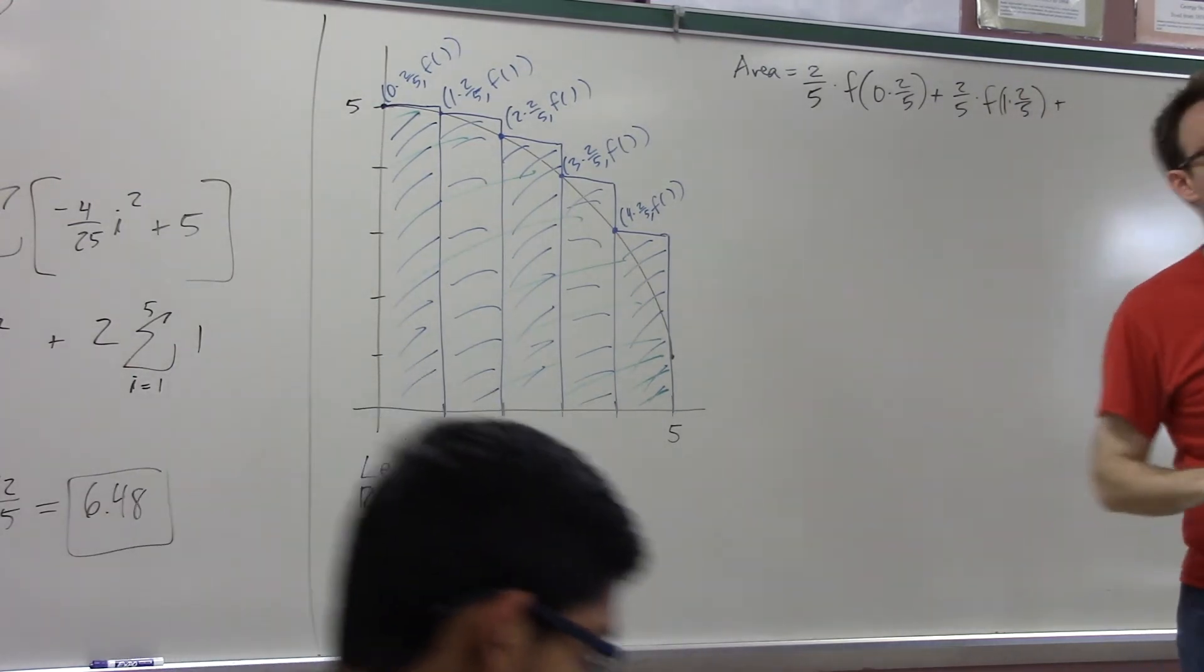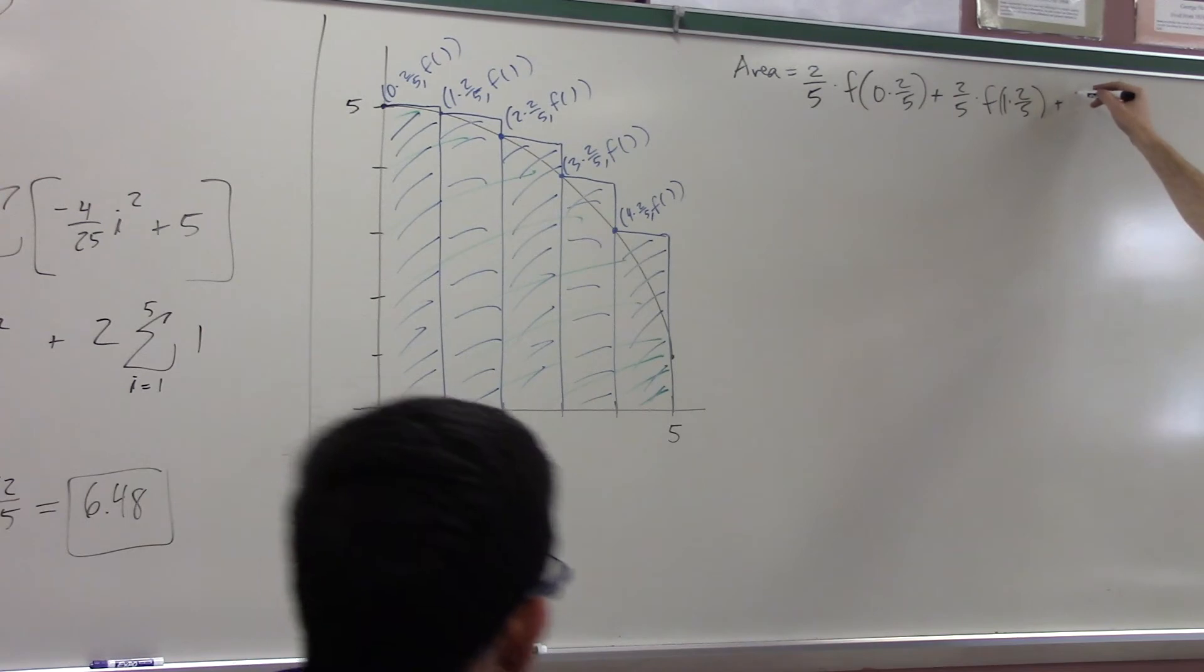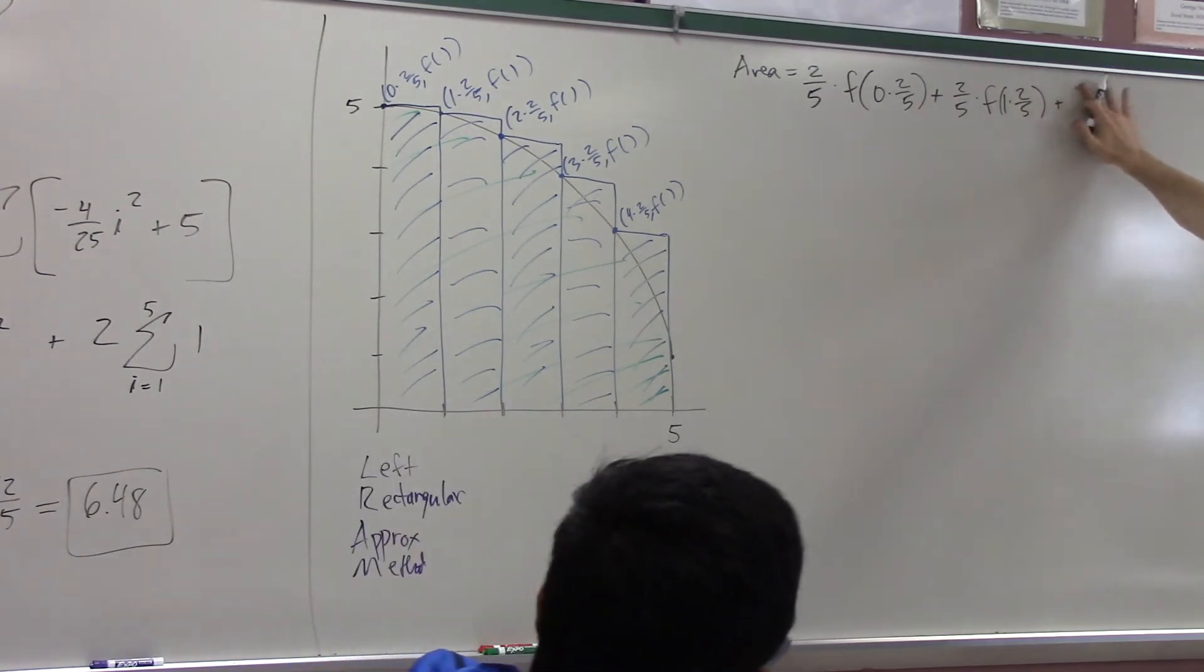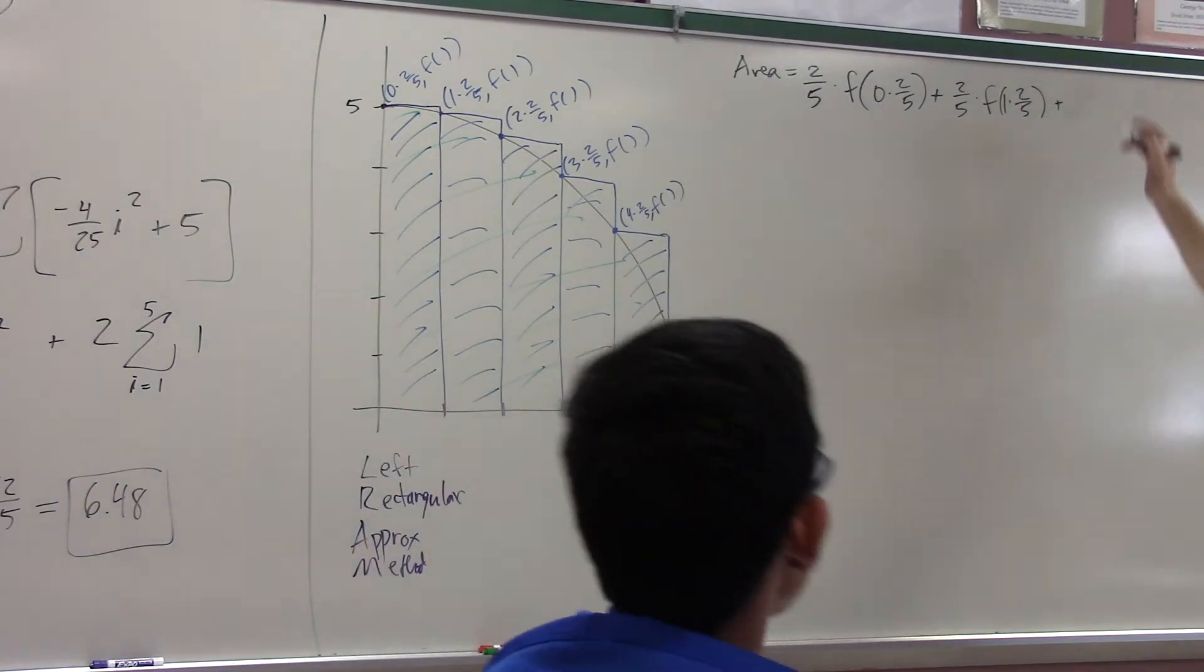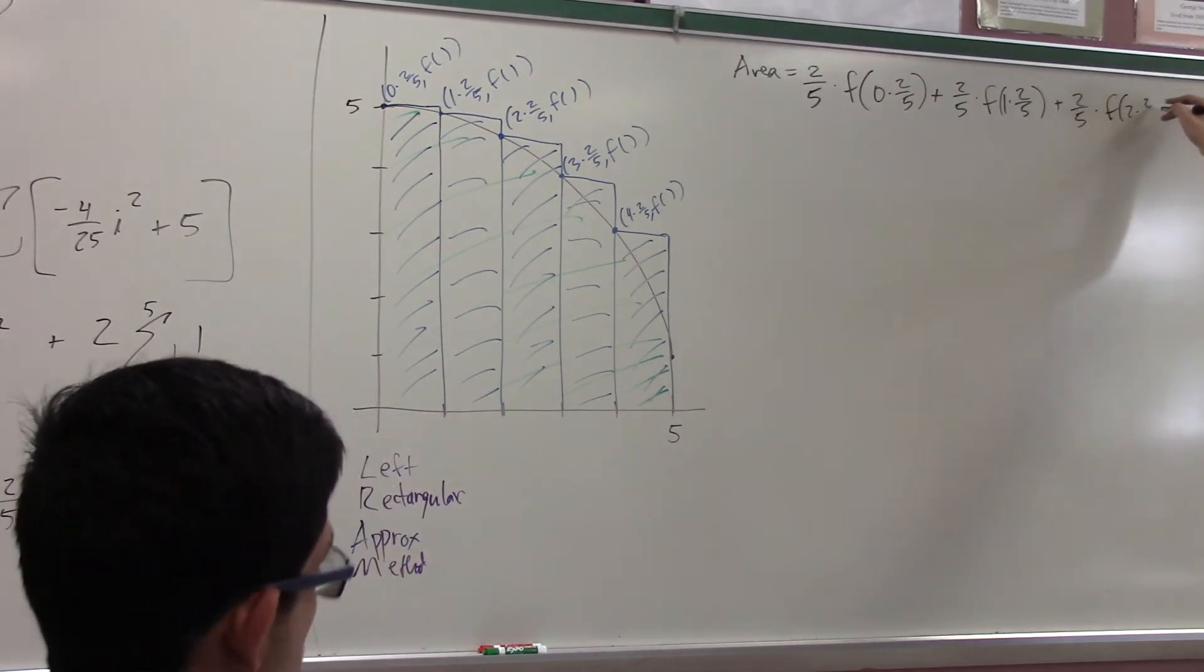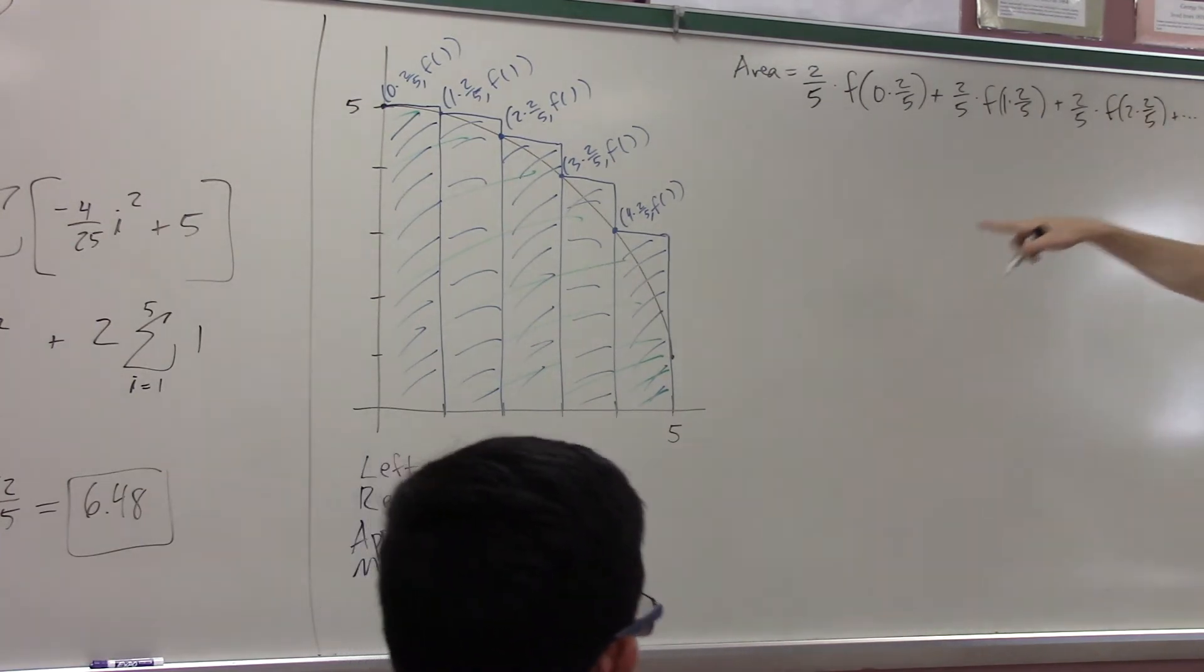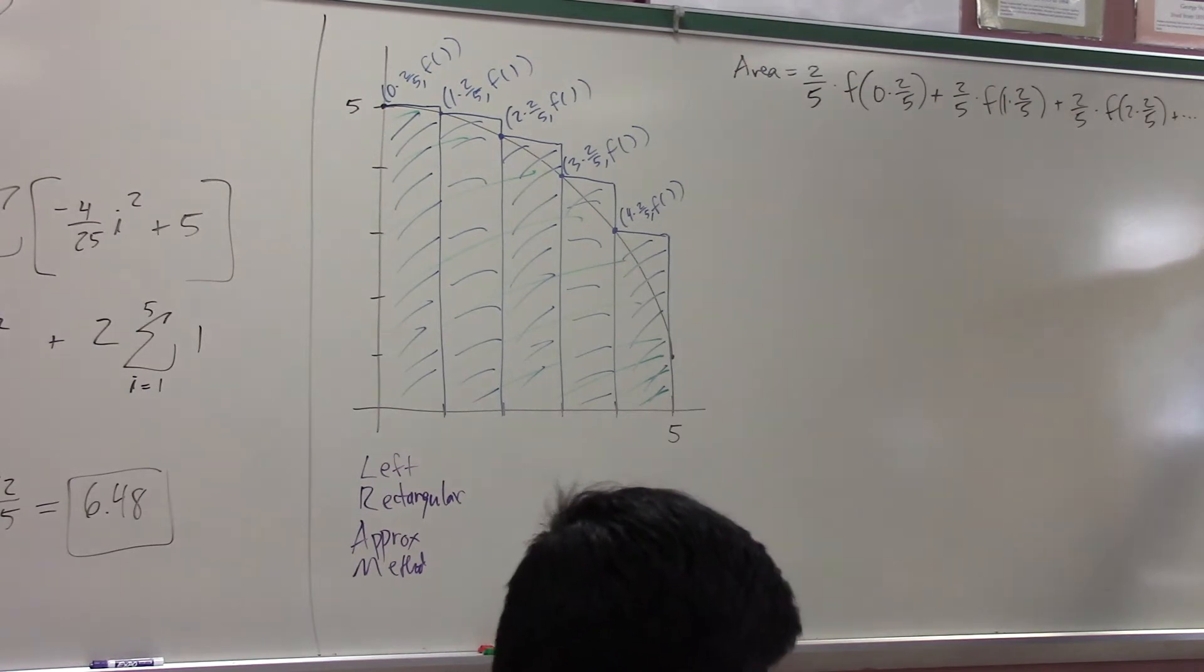What's the area of the third rectangle, BJ? F of two times two-fifths times two-fifths. Wait, wait, wait. Careful. What's the width of the rectangle? Two-fifths. Just two-fifths. Times f of two times two-fifths. Good. And then I'll just dot dot dot it to the end, which is the last one is two-fifths times f of four times two-fifths.